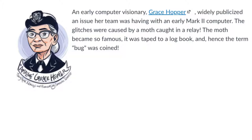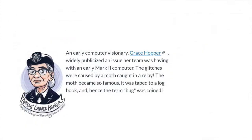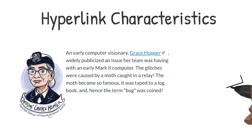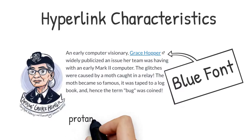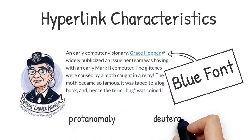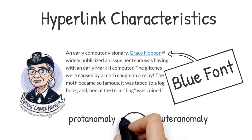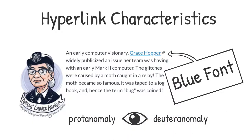Let's take a closer look at the linked text. The web standard for links is a blue font. The origin of this choice is not clear, but blue is legible to people with proto-anomaly and deuteranomaly, which limit their ability to see red and green. Thus, blue is an obvious, visible choice for link color.